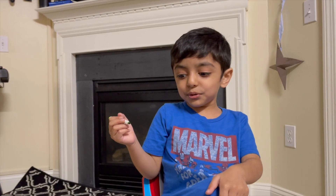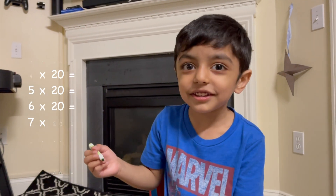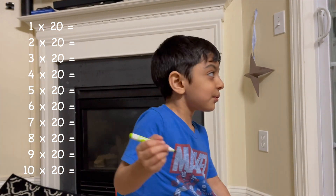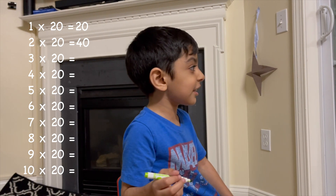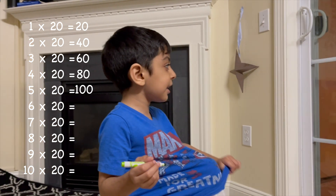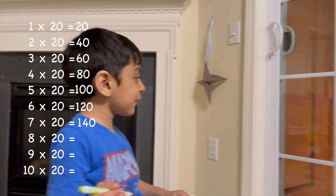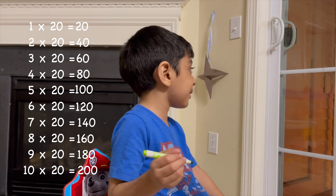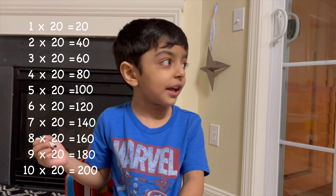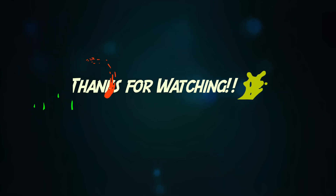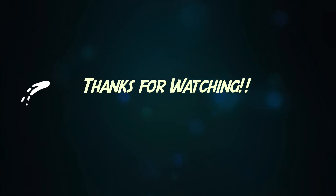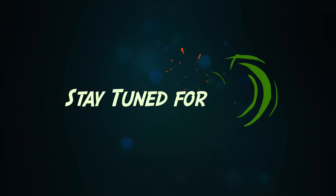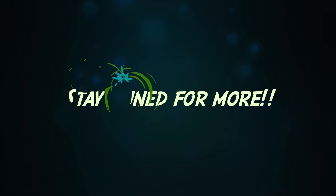I want 20. Okay, 20. 20 times 1 is 20. 20, 40, 60, 80, 100, 120, 140, 160, 180, 200. 20 times 10 is 200. Thank you.